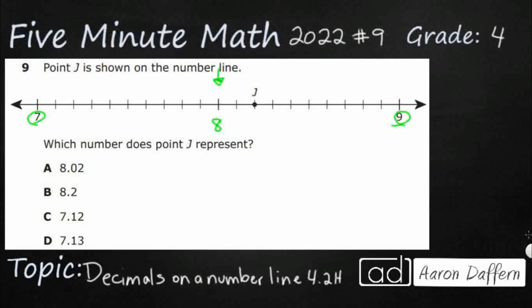So it's going to be between 8 and 9 — and look what that does. That helps us eliminate two answers: 7.12 and 7.13. So now we've just got 8.2 or 8.02.